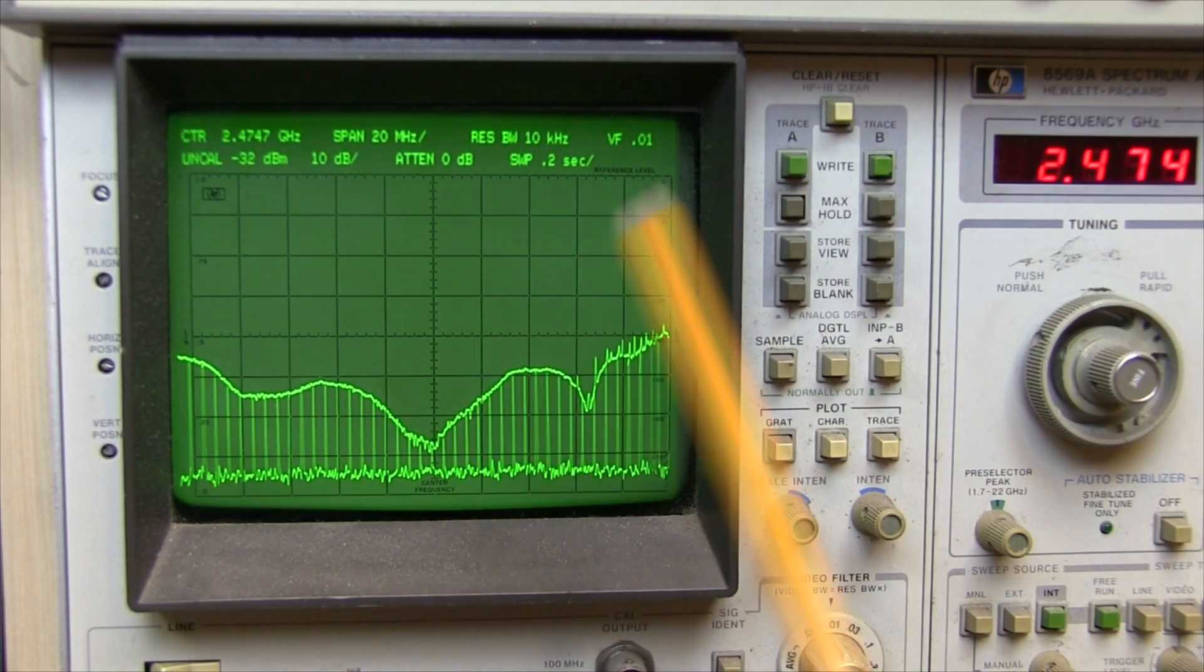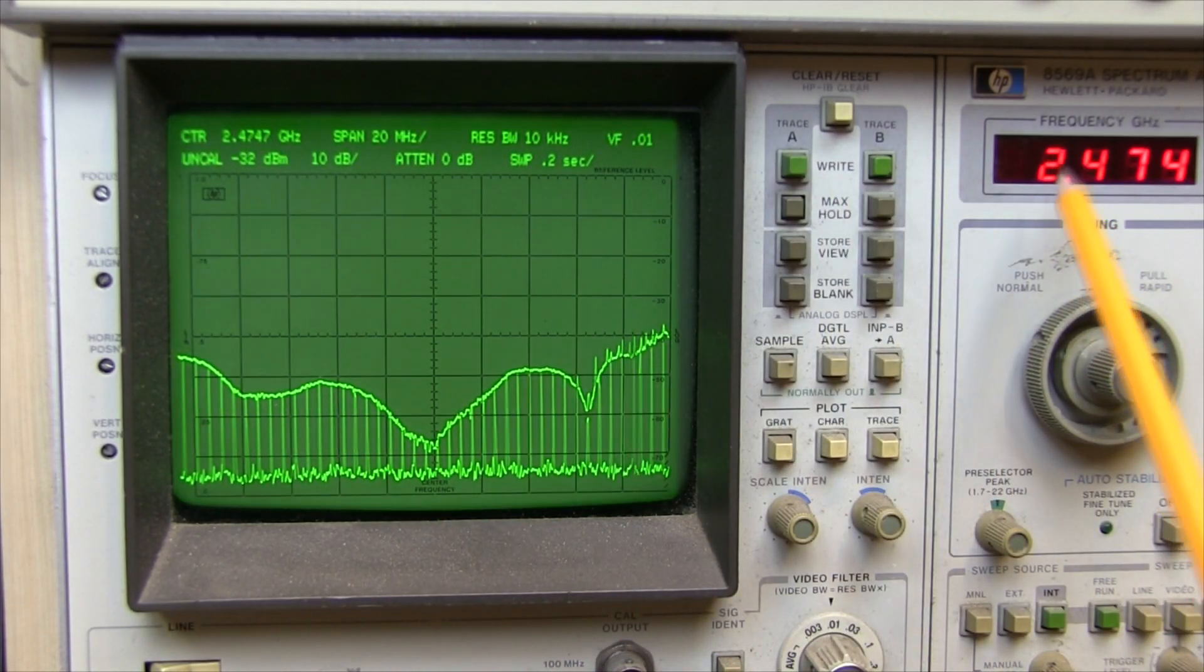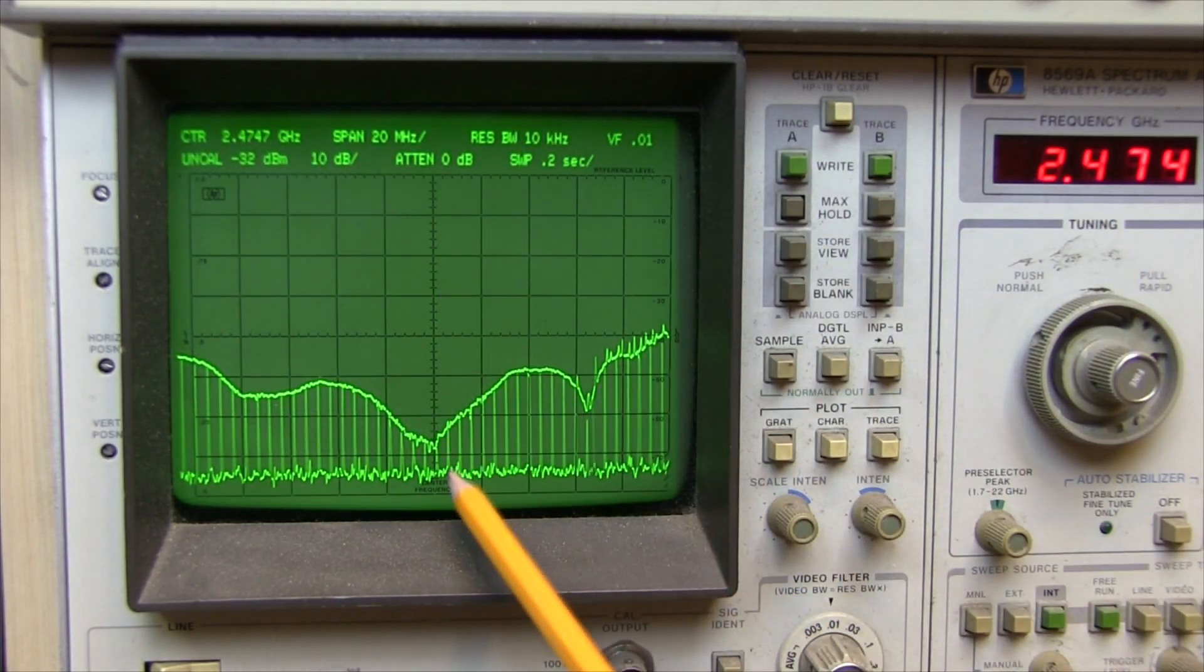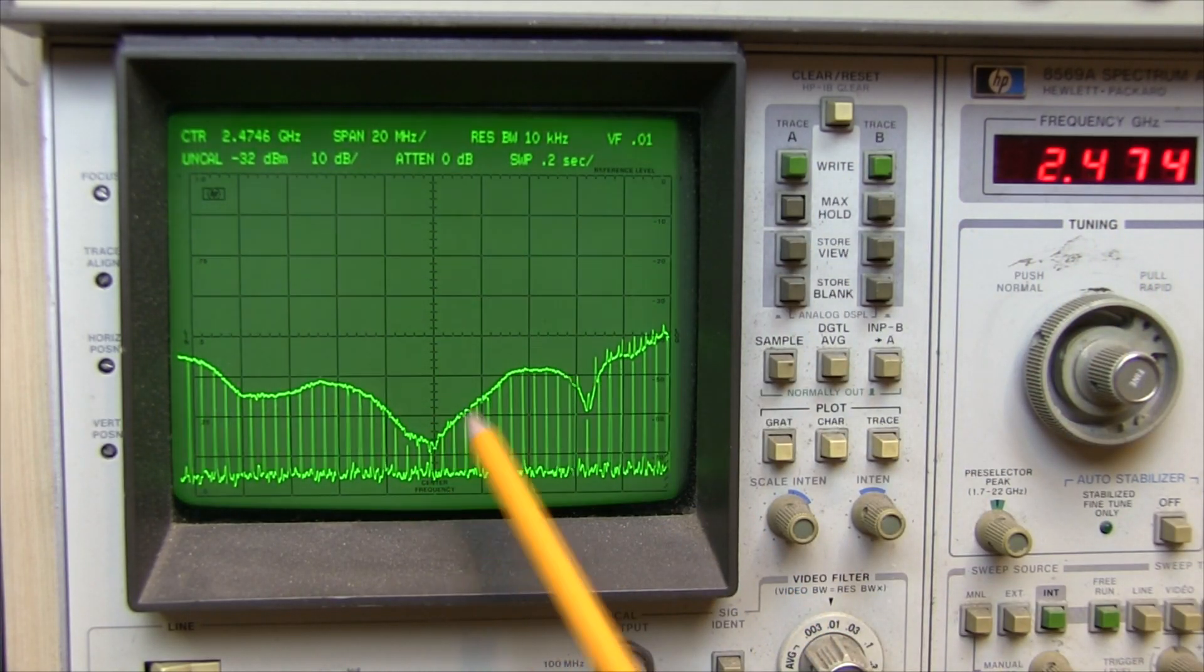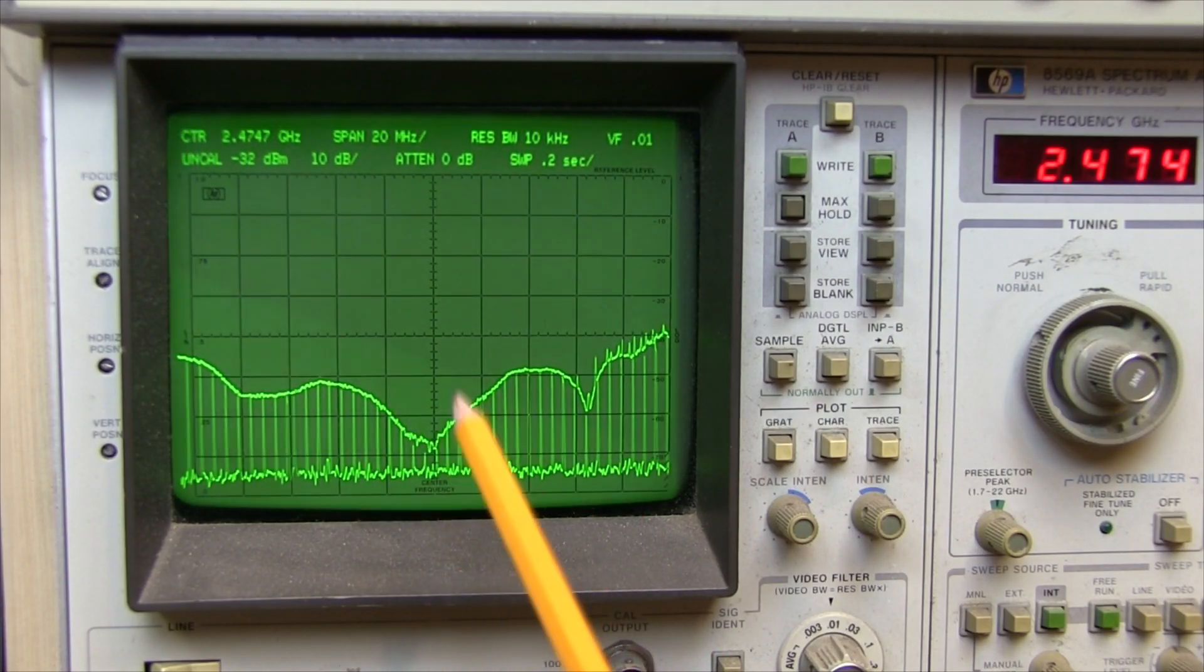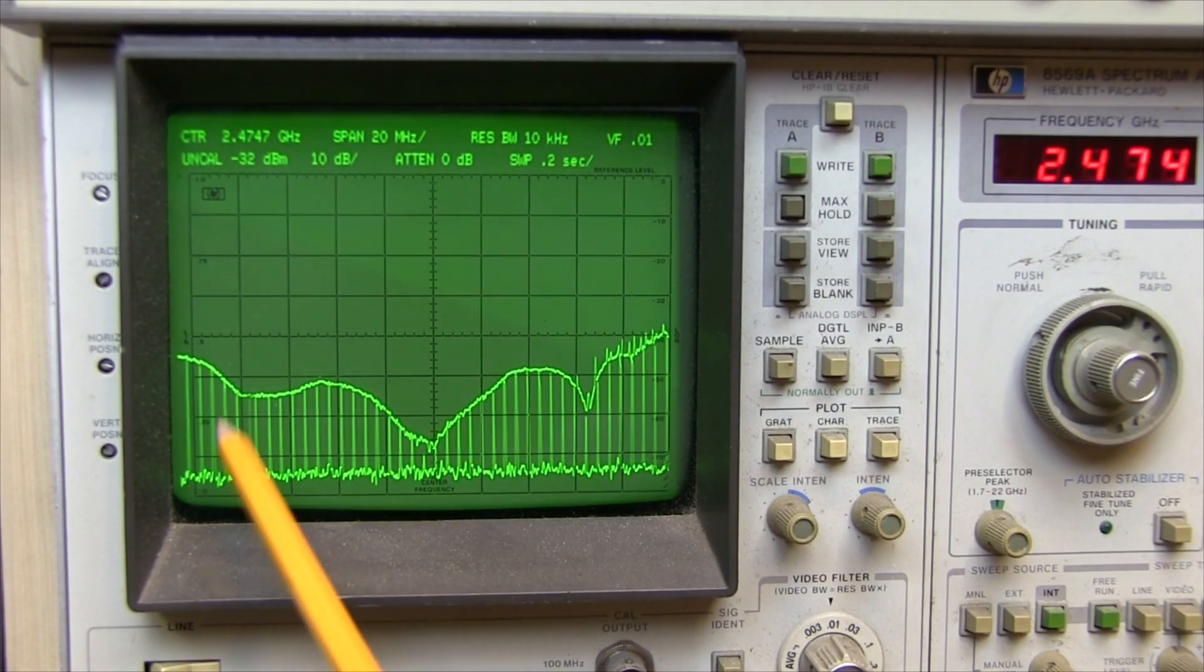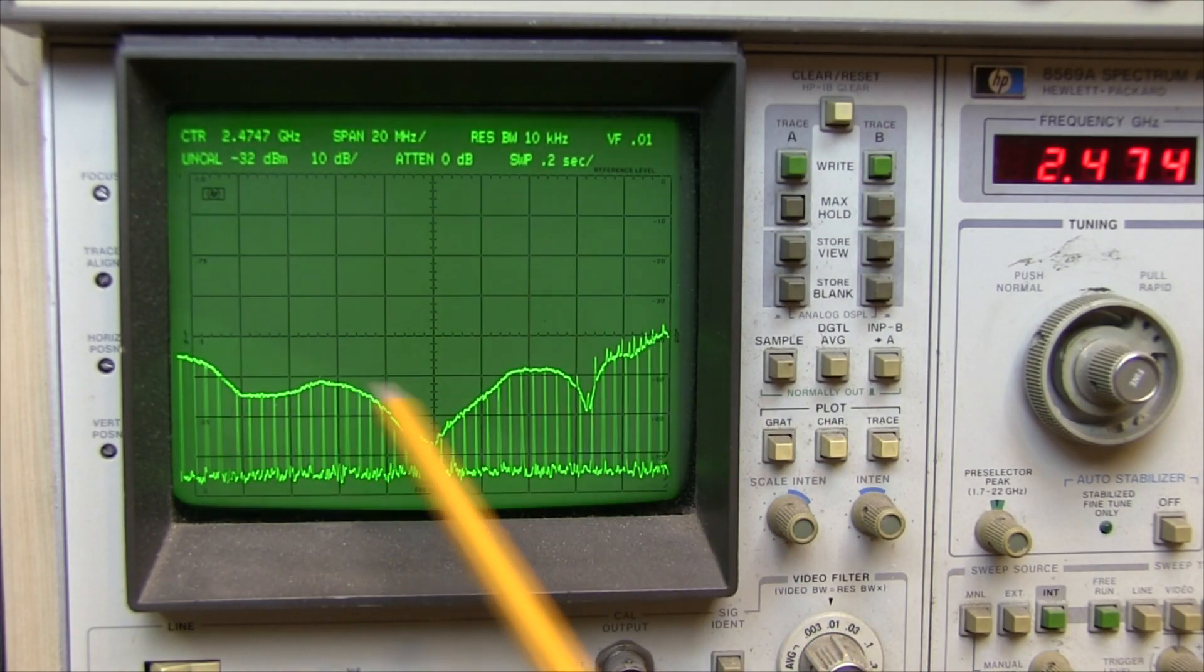As you can see on the spectrum analyzer, I've got the line centered here on 2.47 GHz and we've got this lovely frequency response right about here, bang spot on for the Wi-Fi spectrum. I've got the spectrum analyzer on max hold at the moment so you can see a more defined line of the frequency response across that area.